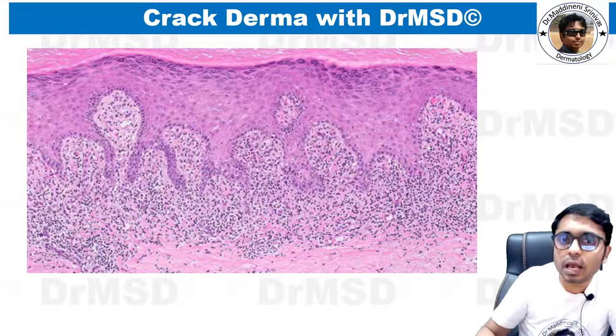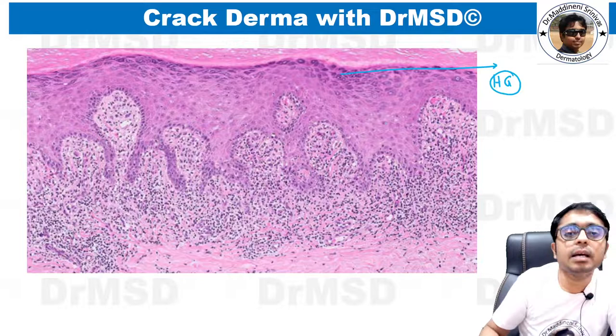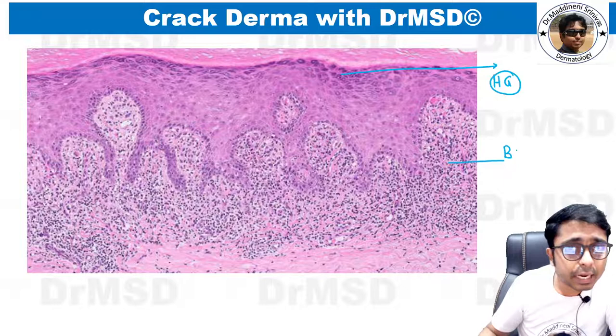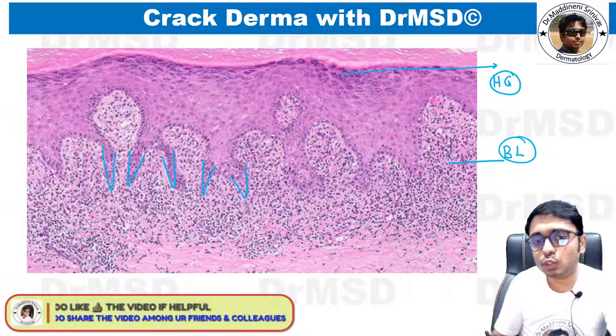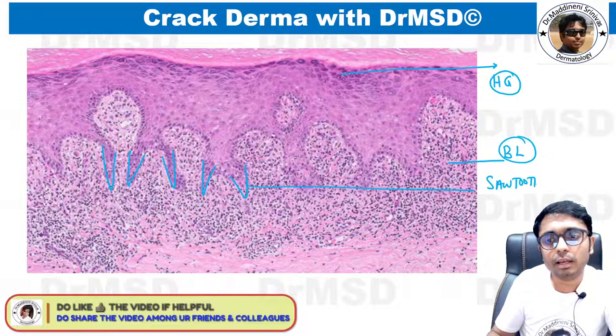Here you can see the actual histopathological picture of lichen planus. You can clearly notice hypergranulosis, and also see very confluent band-shaped lymphocytic infiltration. If you observe carefully, you can also see that the rete ridges are becoming very sharp — this is the reason they are called saw-toothing of the rete ridges.